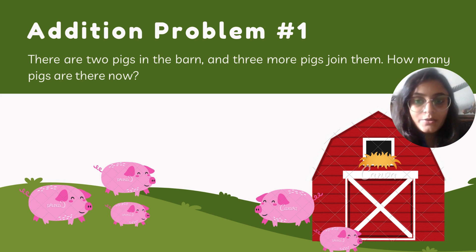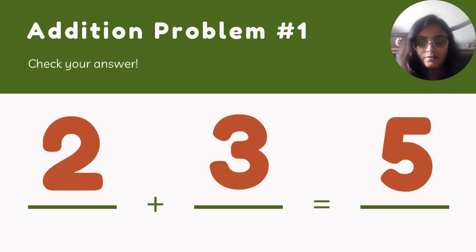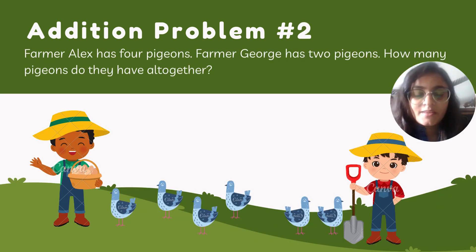In total we have five pigs. That means two pigs plus three pigs add up to five pigs. Let's learn how to write this in addition format: two pigs plus three pigs equals five pigs.